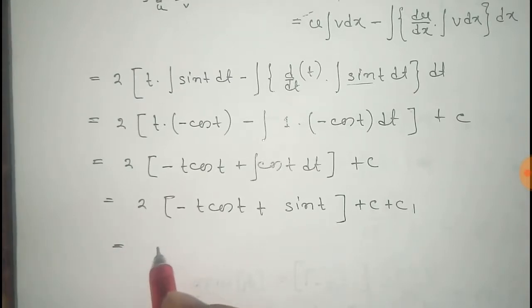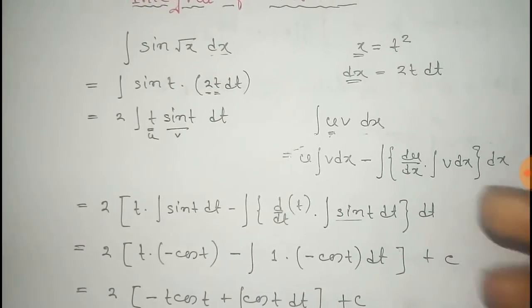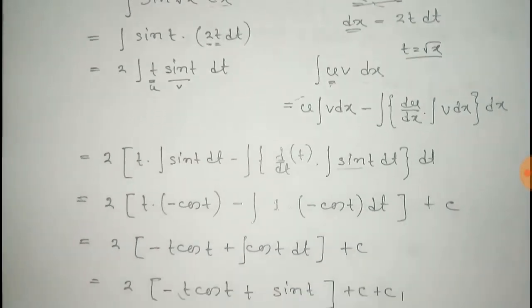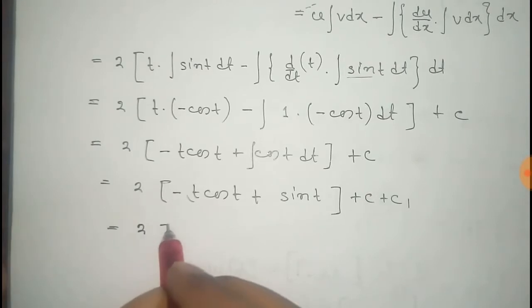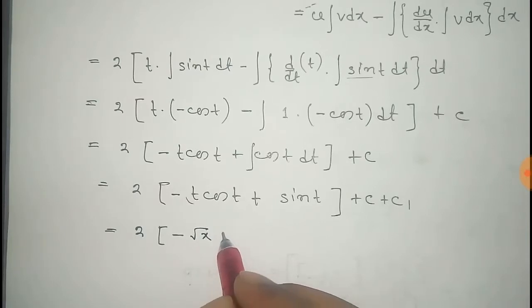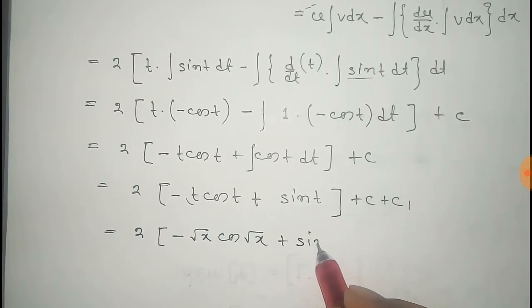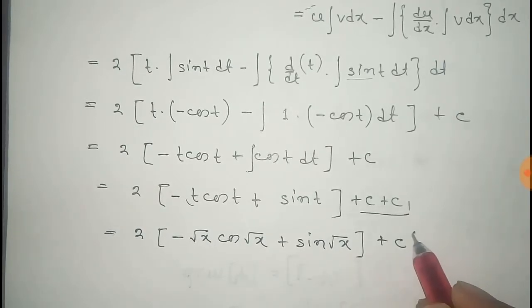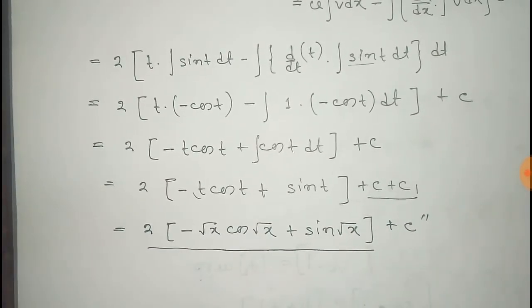Now we put the value of t back into this equation. We considered before that t² equals x, so t equals √x. Substituting this value of t, the expression becomes 2 times [−√x·cos(√x) plus sin(√x)], and we take the constants together as a new constant C''. Thus we get the integral of sin(√x) dx.